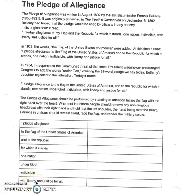The last line, 'with liberty and justice for all,' refers to the idea that everyone should be treated equally — there should be fairness and freedom for each individual person in the United States, not just for a group but for everyone. I hope you found the history, the actual pledge, and this analysis helpful. Any time we have words, people can interpret them differently — that's just one interpretation you received today. Thanks for watching.